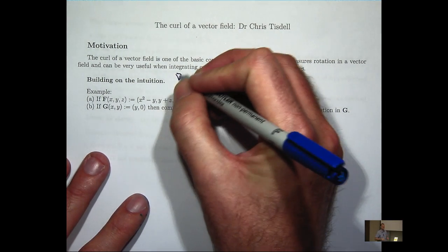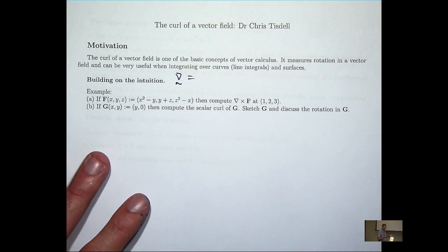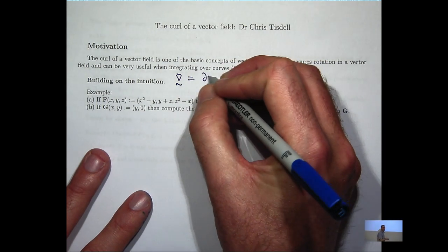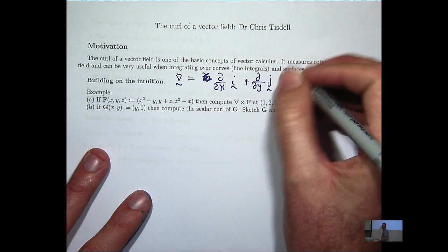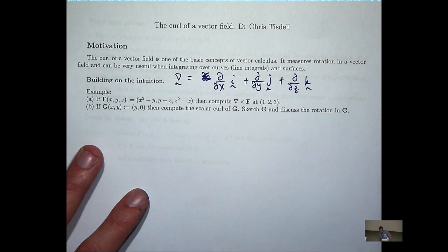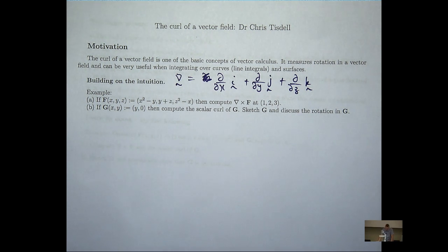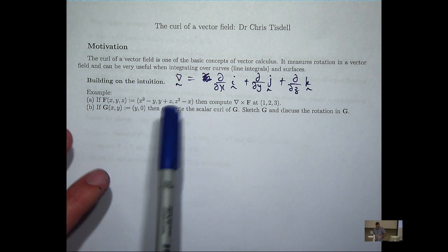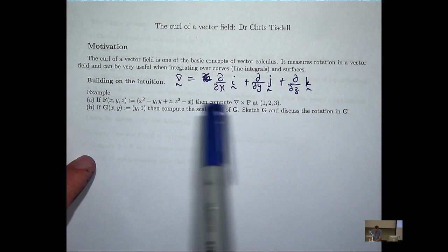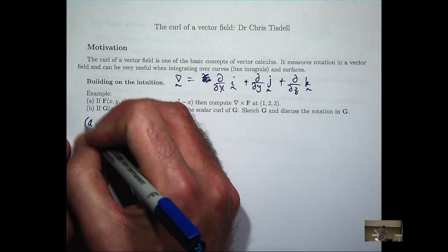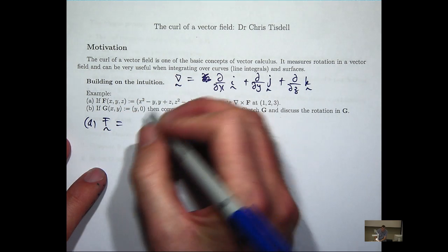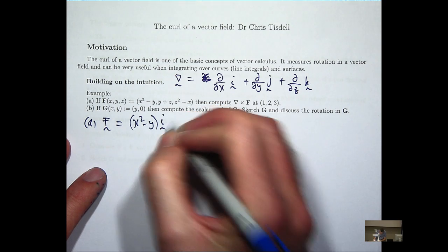Remember this triangle type expression, which we call nabla or del. It's just a symbolic vector that operates on certain vector fields or functions in certain ways. Here you can see I'm using this cross product. So the del operator is acting on f through this cross product. Here I've used an ordered triple, but let's write it out in terms of i's, j's and k's so everybody is comfortable with the notation.